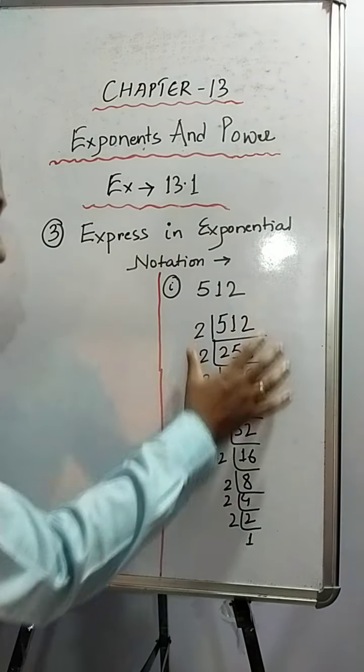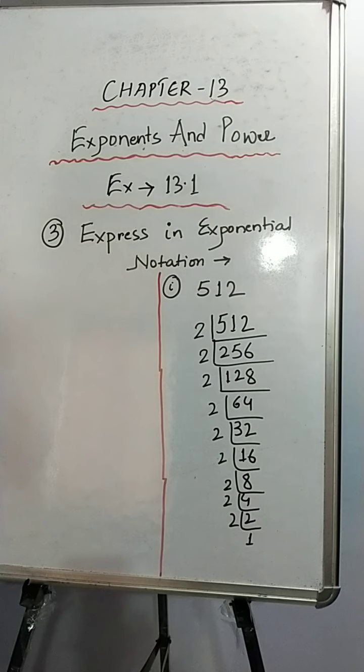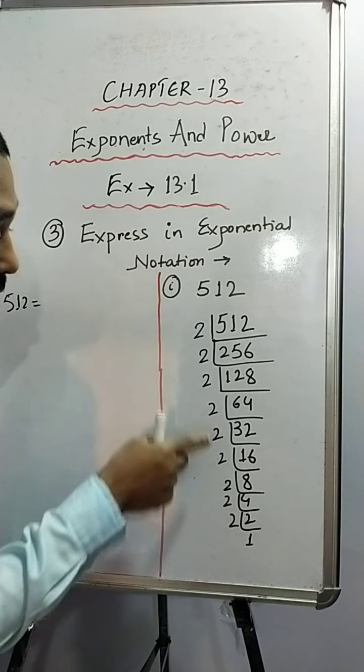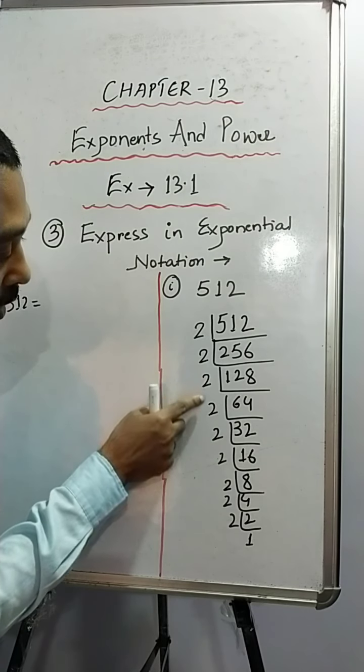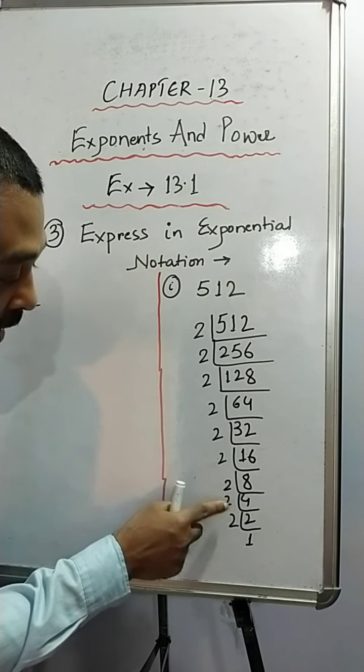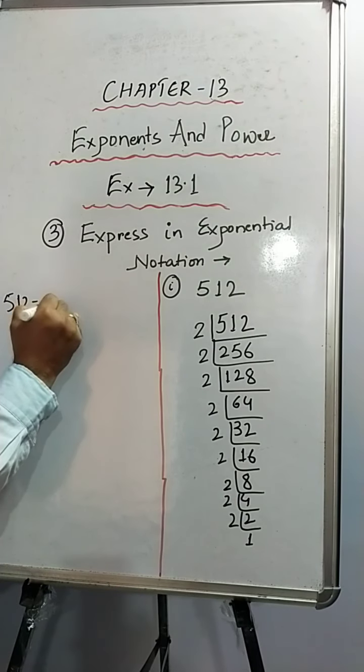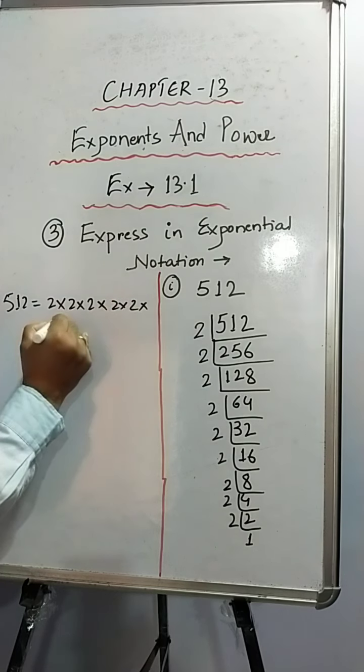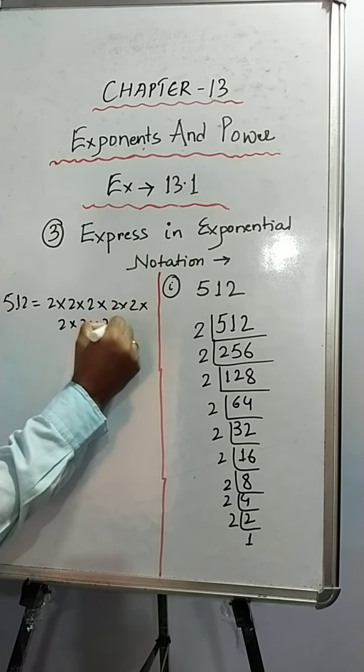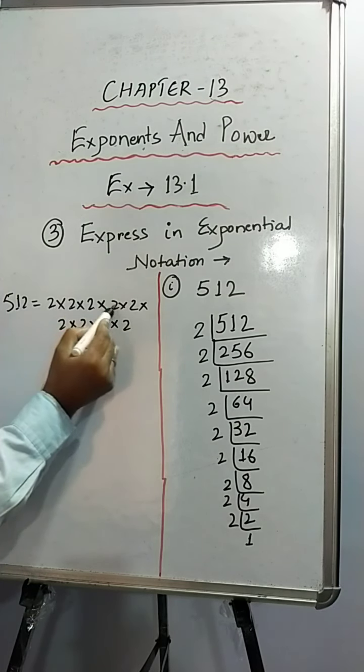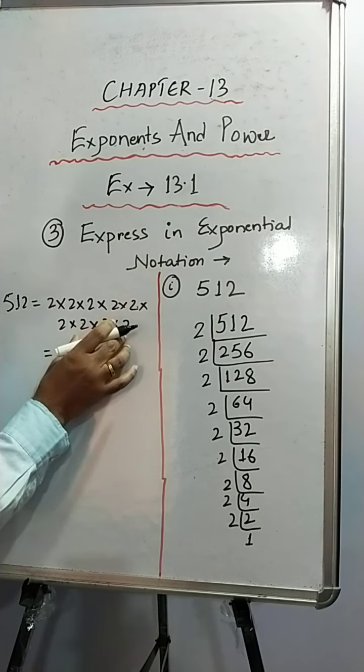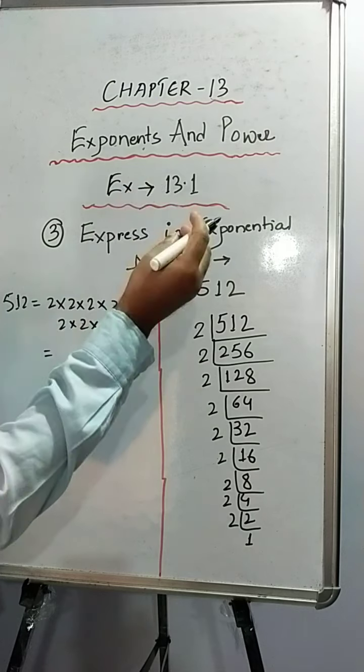Now, what is the next step after you are done with this one? What is the next step that you have to do? You have to write 512 here and you have to write all the factors. So how many 2's are there? Count it: 1, 2, 3, 4, 5, 6, 7, 8, 9. So we will write this: 2 times 2 times 2 times 2 times 2 times 2 times 2 times 2 times 2.